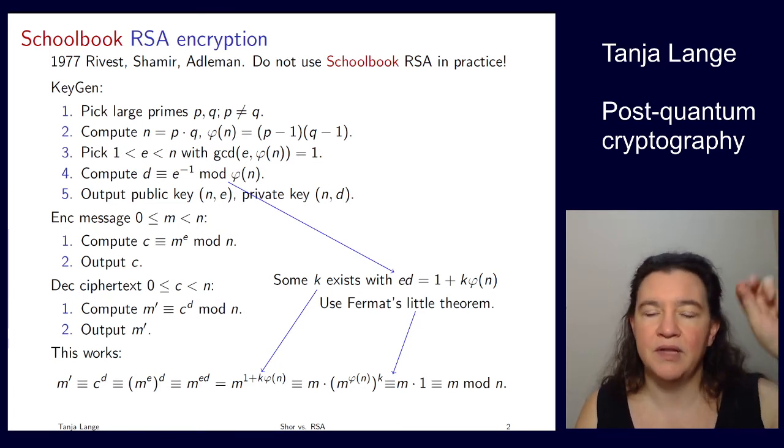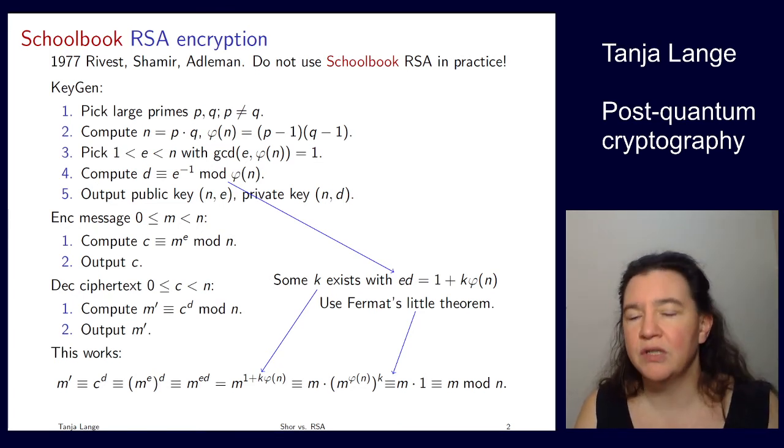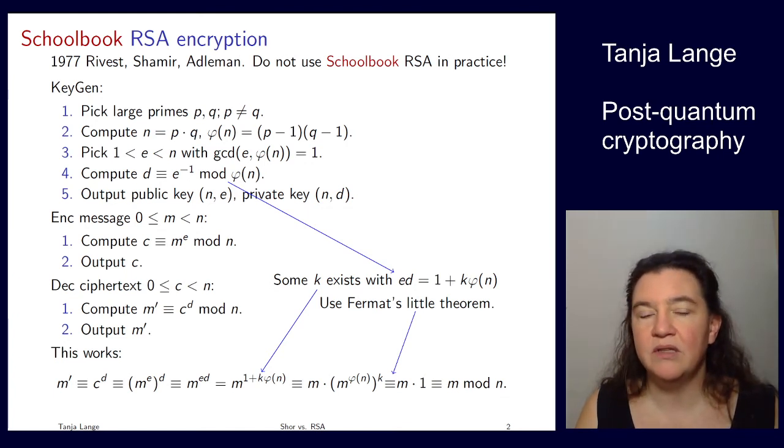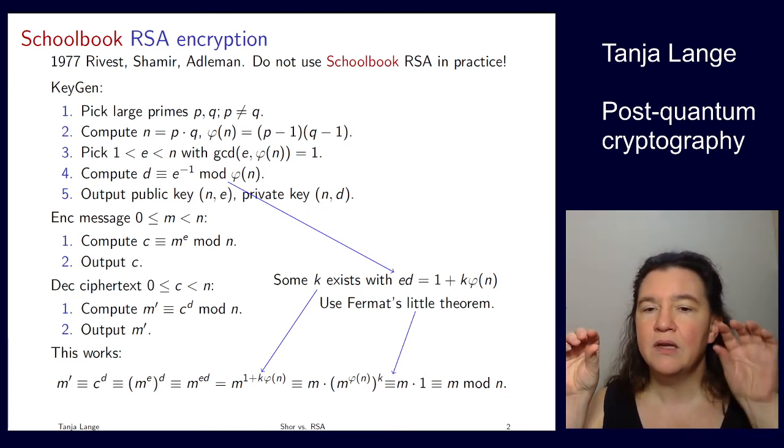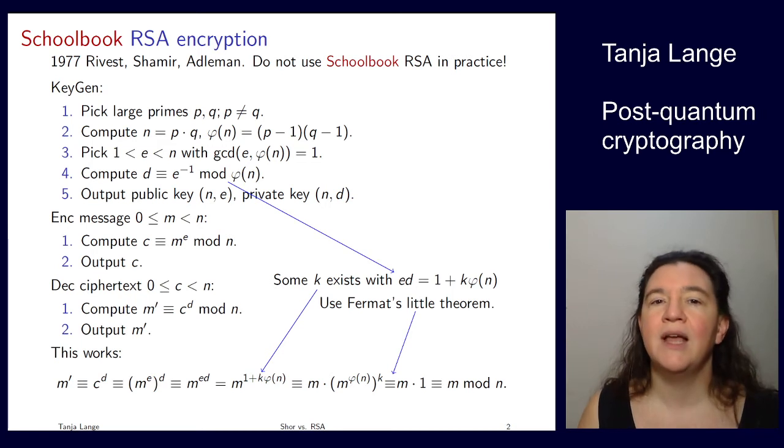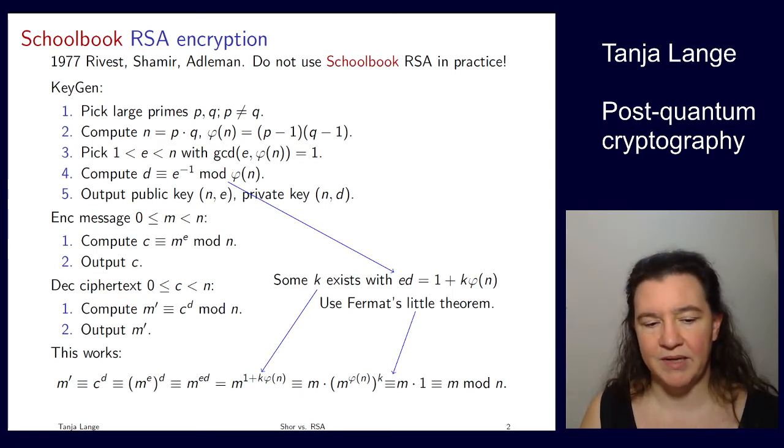And then using Fermat's little theorem, or Euler's theorem, we get that m^phi(n) is congruent to 1 mod n. And then there's a 1 to the k, which still is 1. And so that means that our m' is congruent to m mod n. And our receiver actually gets the correct message.